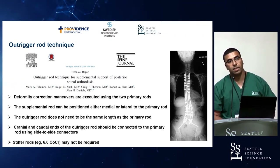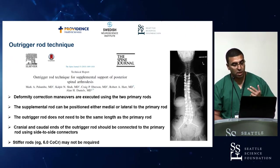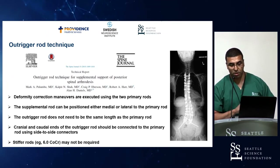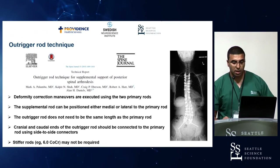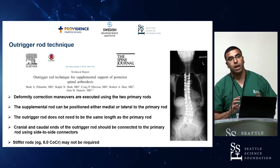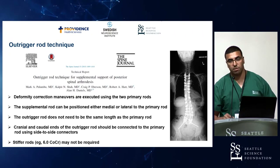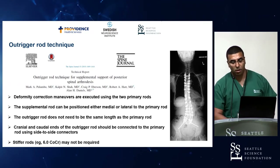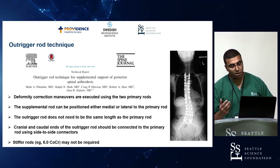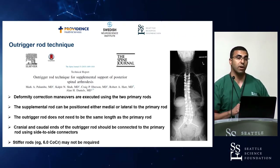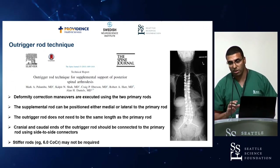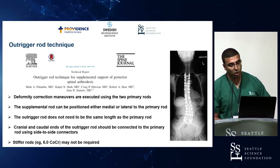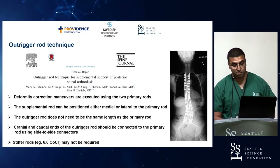The outrigger rods don't need to have the same length as the primary rods, but it's important that they cover the area where you think it is highly unstable, such as the thoracolumbar junction or a PSO level. Regarding stiffness, the authors say stiffer rods may not be required. We personally prefer the combination of titanium and cobalt-chrome rods, while some people use stainless steel.